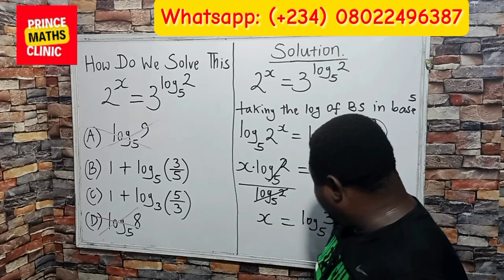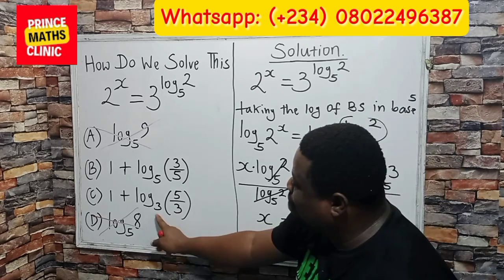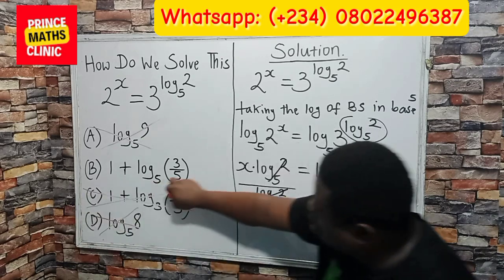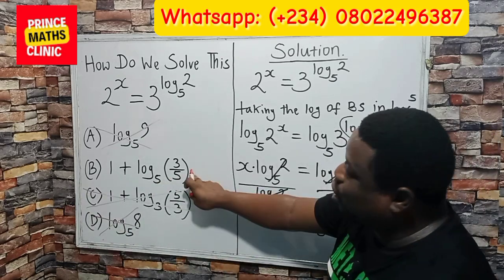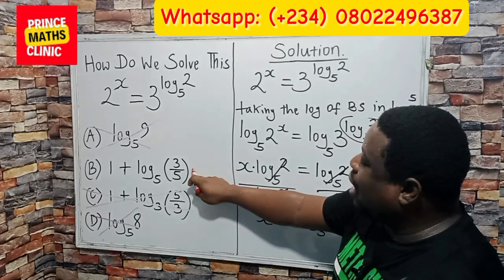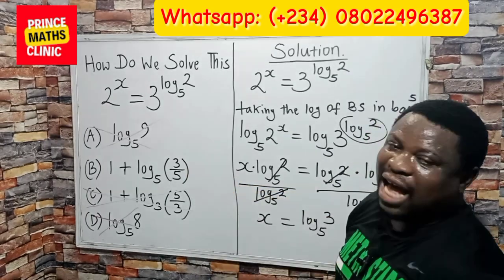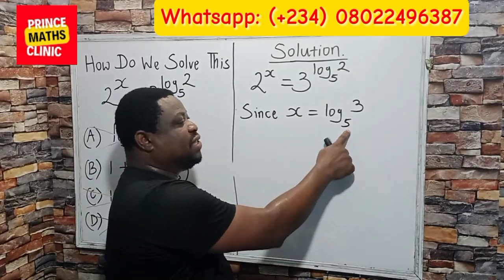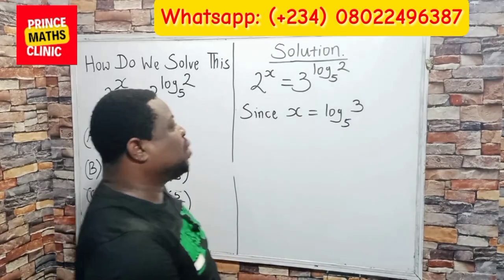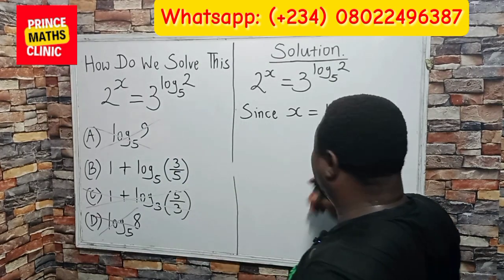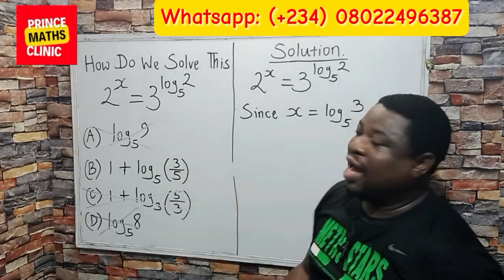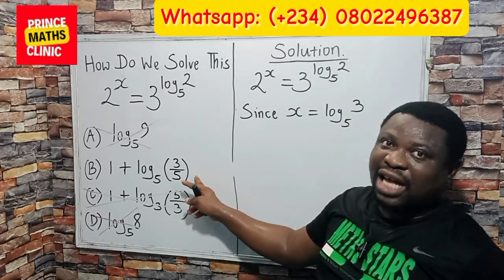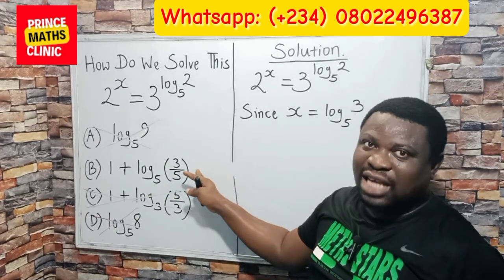My base is 5, so it cannot be c. So certainly this is going to be the correct answer. But I am going to prove it. Remember that we found x is log of 3 base 5, which is valid. But because this exact form is not listed as an option, they gave it to us in a different form. I want to prove to you that this is the answer.